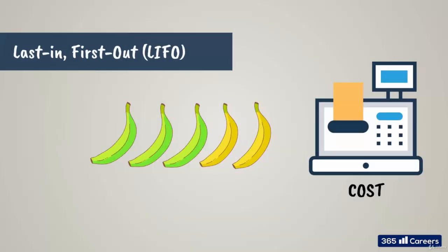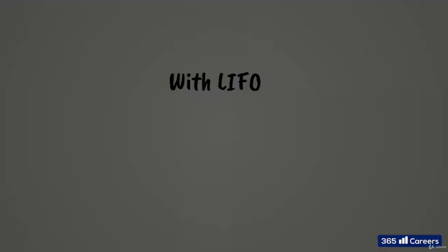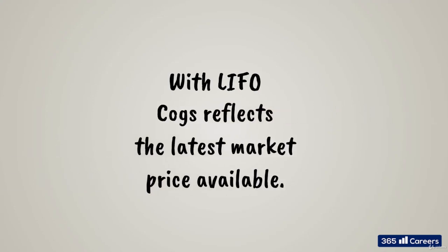The other method, last in first out, which is not allowed under IFRS, assumes the opposite principle. The first products going out of our stock are the last that came in. In our case, $1.30 bananas go out first. The rationale behind this principle, known as LIFO, is that COGS actually reflects the latest market price available. However, the issue is that if the price of items fluctuates significantly, we can have strange inventory values, as the first items that have entered our inventory have been there for some time and are registered at a price that is now misrepresentative.